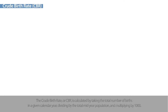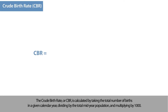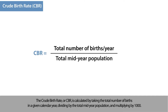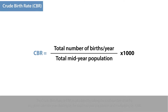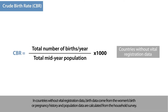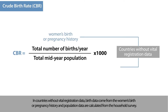The crude birth rate, or CBR, is calculated by taking the total number of births in a given calendar year, dividing by the total mid-year population, and multiplying by 1,000. In countries without vital registration data, birth data come from the women's birth or pregnancy history, and population data are calculated from the household survey.